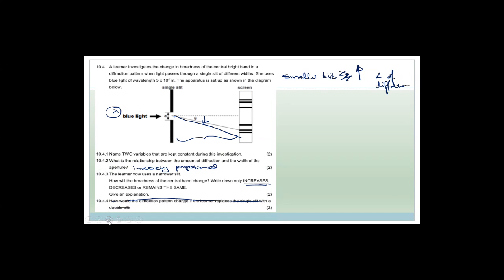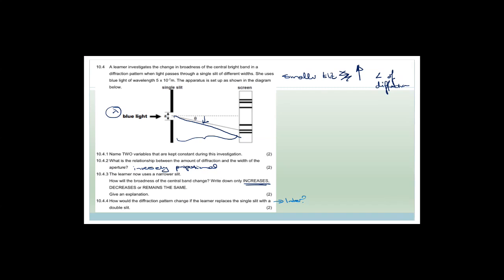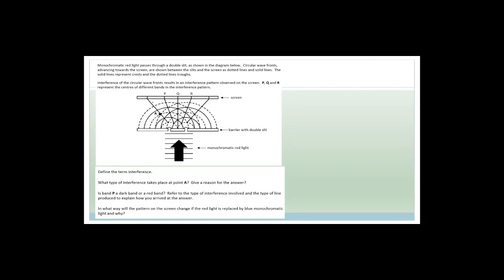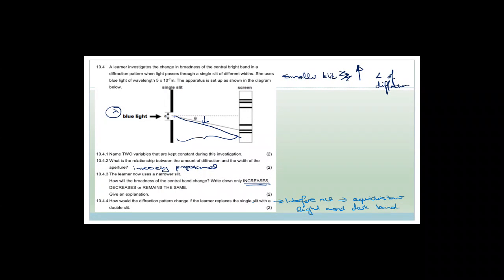If you use a double slit instead of a single slit, what happens is you end up with an interference pattern. You will have equidistant light and dark bands. Lines of destructive interference will be black, and lines of constructive interference will be the color of whatever light you're shining. That's what happens if you replace a single slit with a double slit.